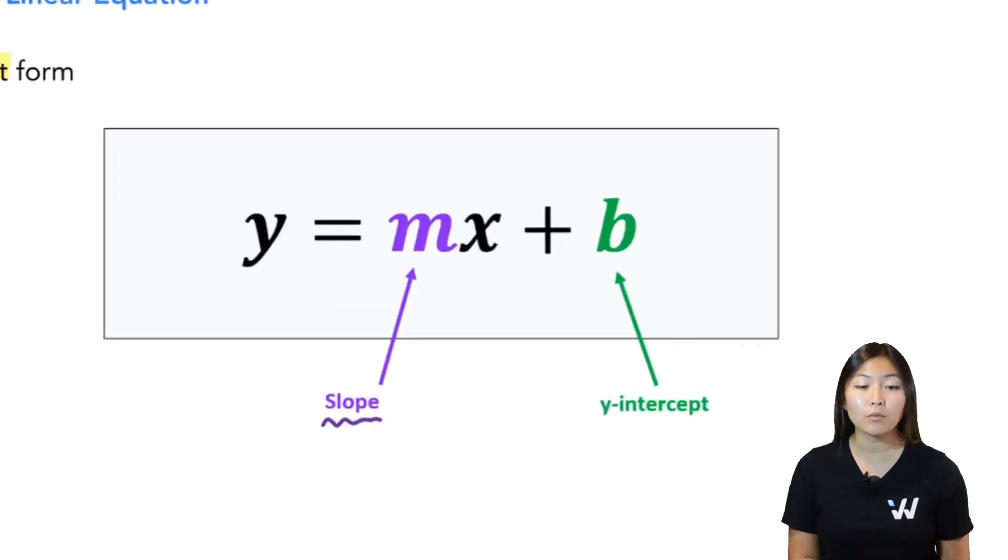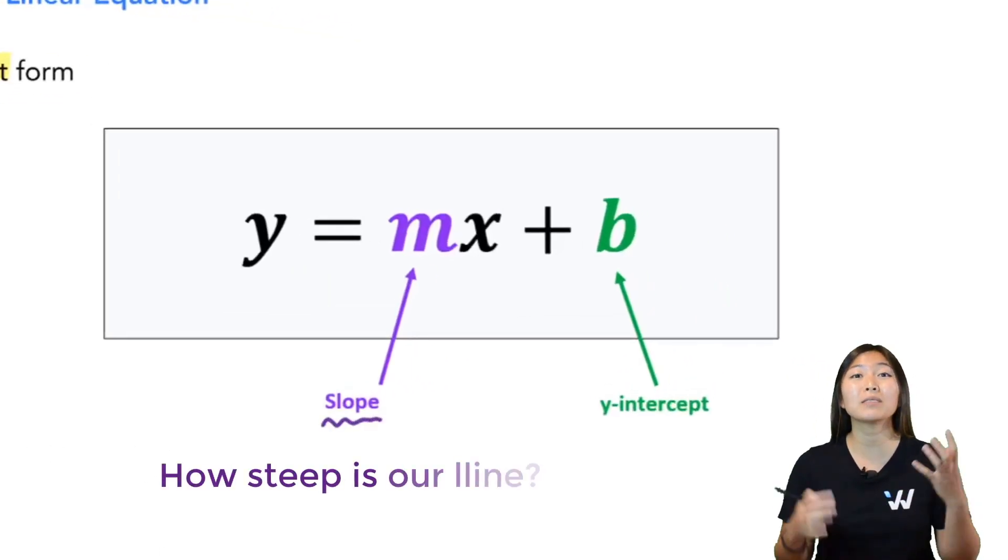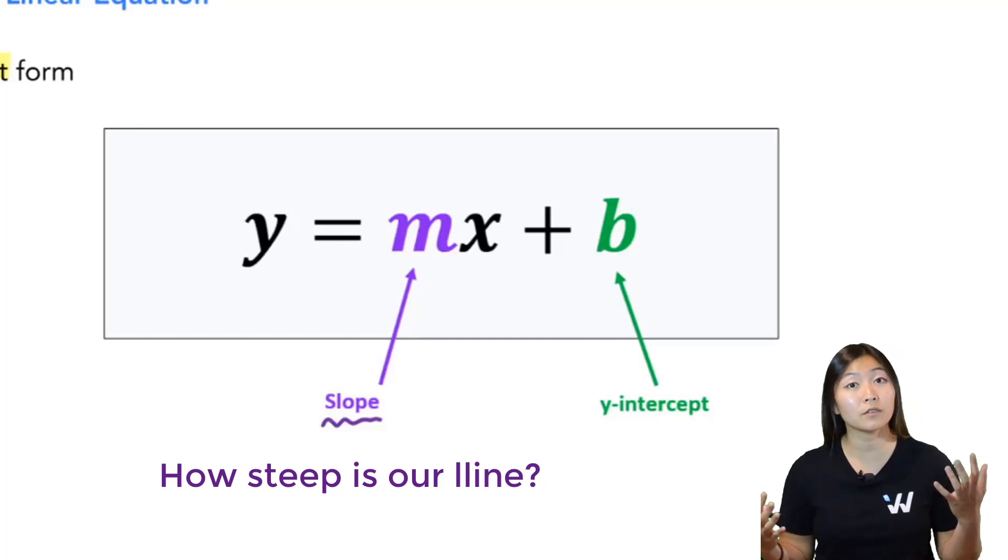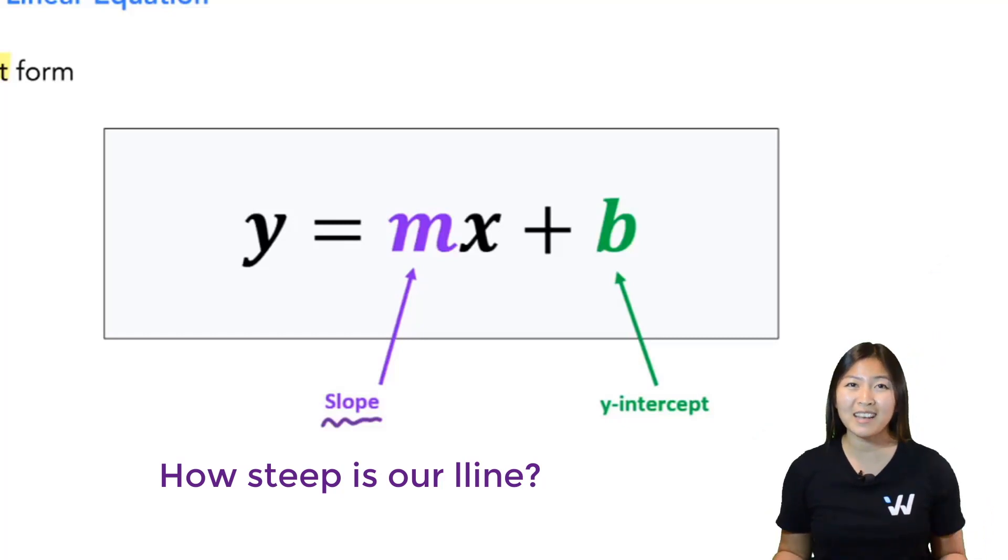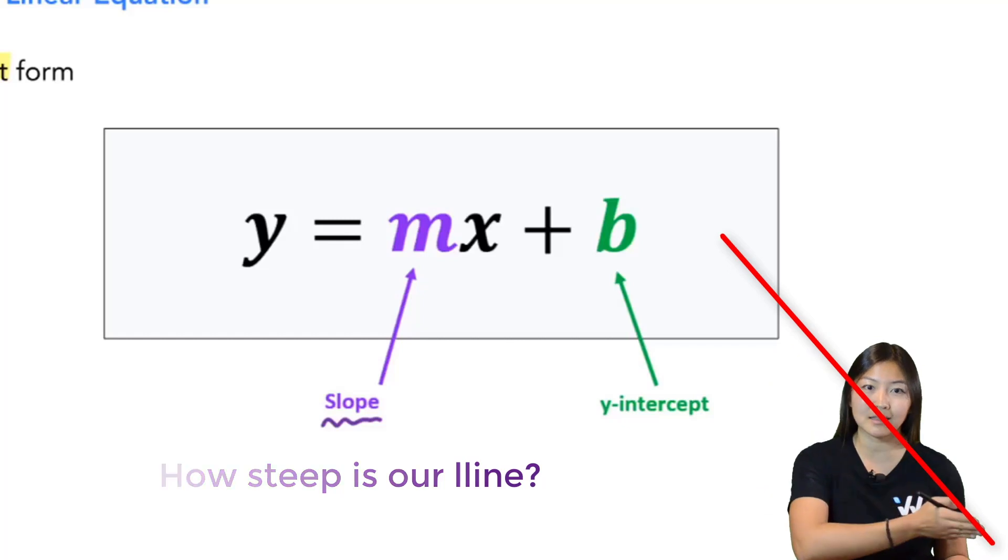The number in the m spot represents the slope. It tells you how steep the line is. If m is positive, we have a positive slope, meaning that your line is going to look like this. If m is negative, that means you're going to have a negative slope. Your line is going to look like this.